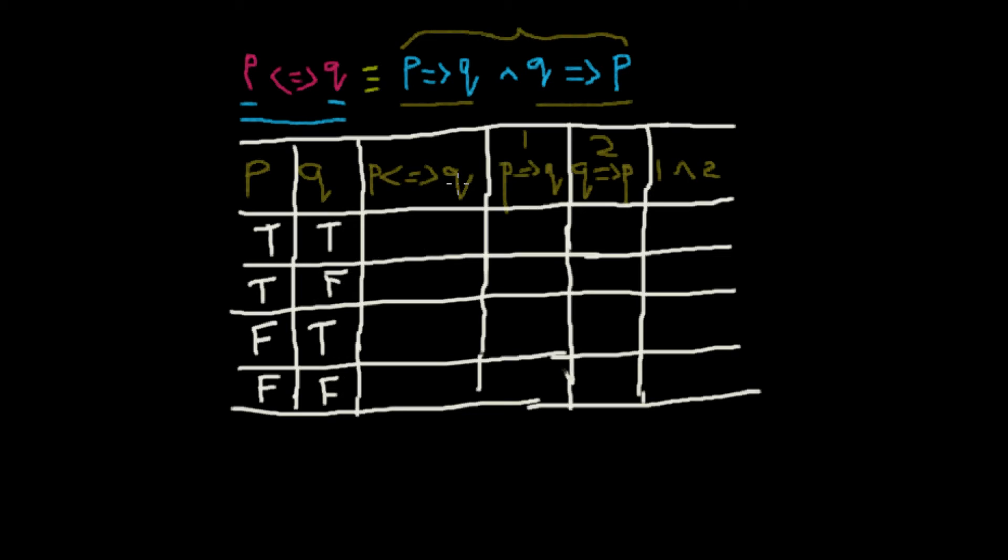P biconditional Q is true when both the values are similar, when both the truth values of P and Q are same. It's true here and same at this time, so it's true. One of the values is false and this is mismatching, so this is going to be false.